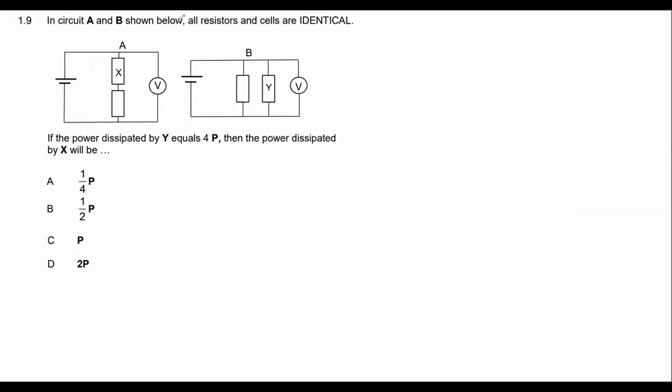This one says in circuit A and B, all resistors and cells are identical. Okay guys, so what that means is that these voltages are the same and the resistances are the same. Okay, remember that?